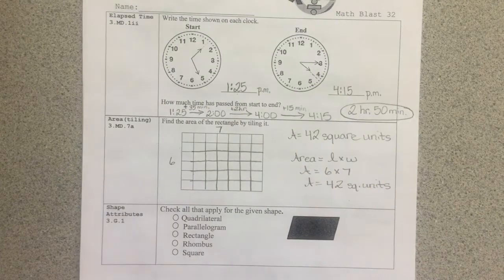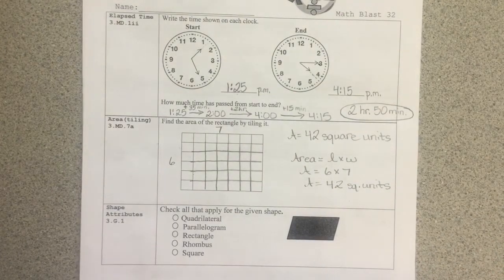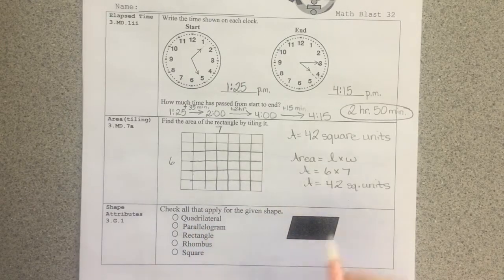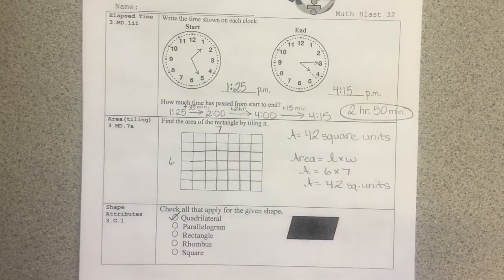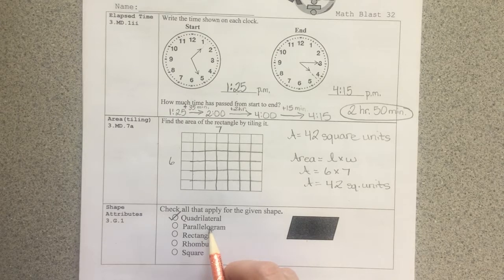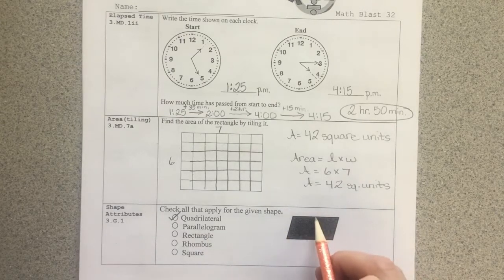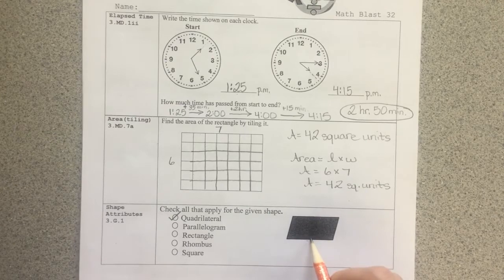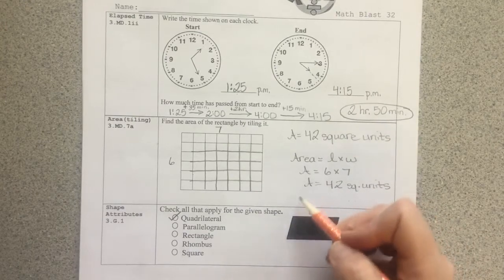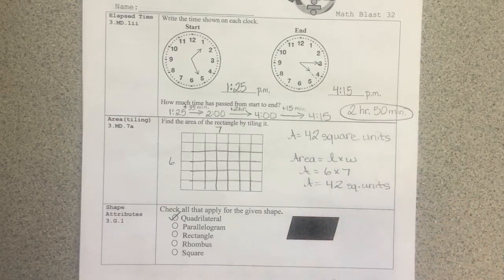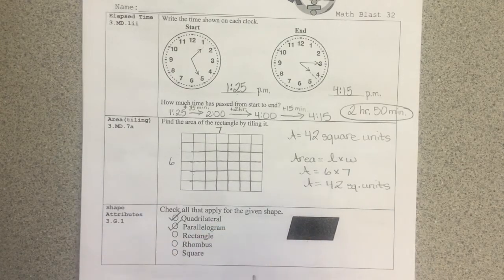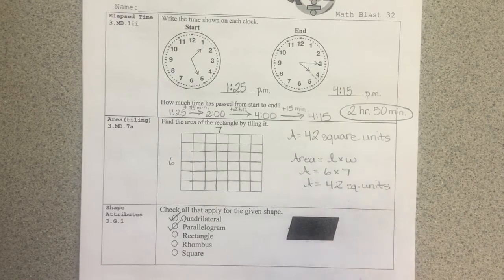Shape attributes. Check all that apply for the given shape. A quadrilateral is a four-sided figure. This definitely has four sides, so we will check that. A parallelogram is a quadrilateral that has two pairs of parallel sides. I notice this side and this side are parallel. They will never touch no matter how far extended. This side and this side are also parallel. No matter how far we extend those, they will never touch each other. They will never intersect or meet. So this shape is a parallelogram because it has two pairs of parallel sides.